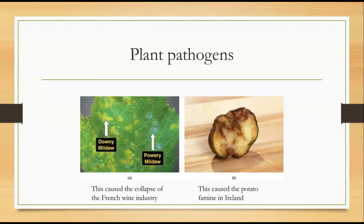Here are some plant pathogens. Downy mildew and powdery mildew caused the collapse of the French wine industry, and potato blight caused the potato famine in Ireland. Two huge causes of disease in plants led to enormous death numbers in humans, and those are protists.